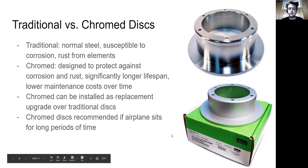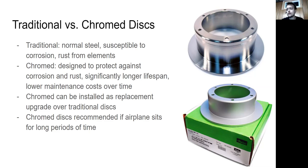If your airplane came with traditional discs, manufacturers usually make chrome versions of these discs so you can get that upgrade. Chrome discs are recommended if the airplane sits for long periods of time, because as the airplane sits, it builds up corrosion and rust. With traditional discs, this might ruin them, but chrome discs are more resistant to that corrosion.